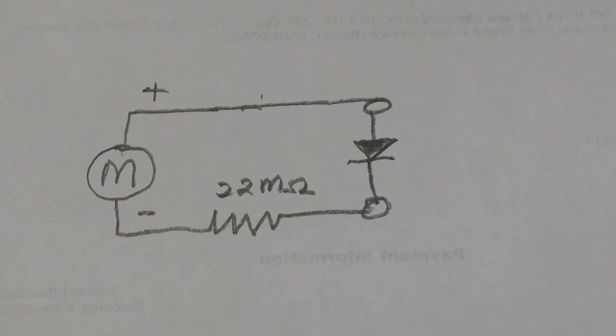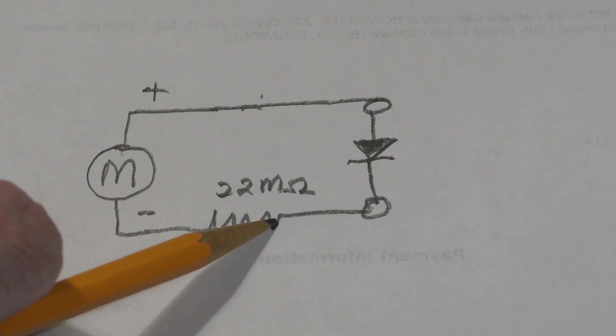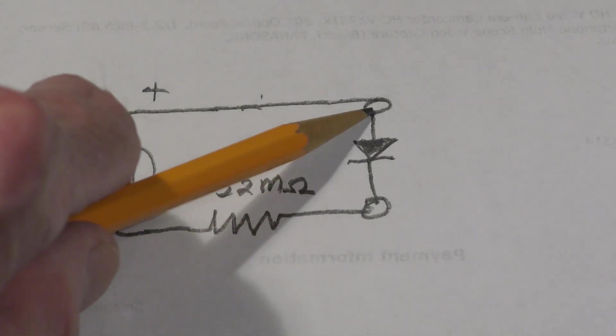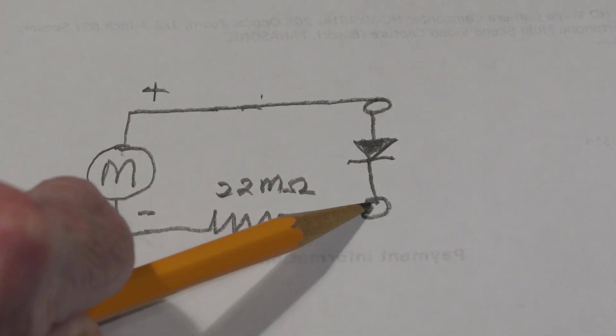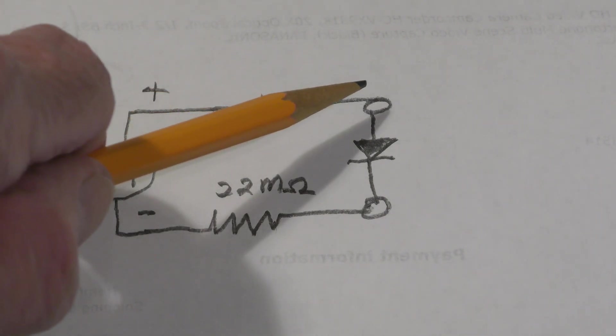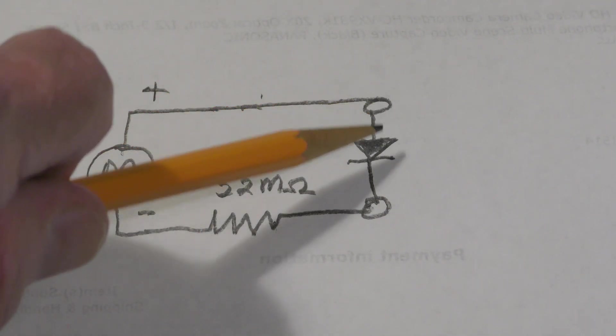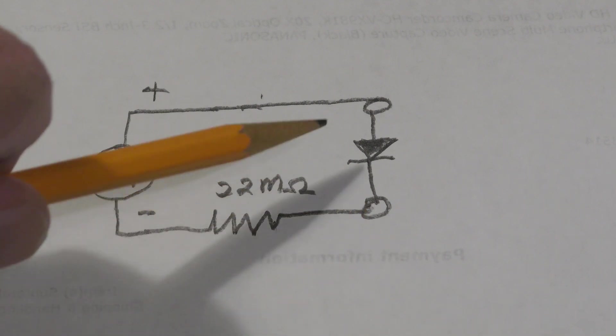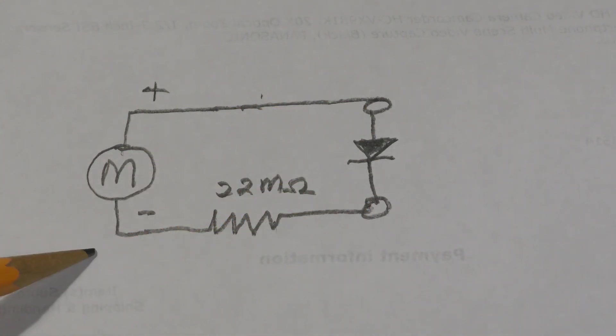Here is the circuit that we're using. This is the megaohm meter. Notice there's a 22 meg current limiting resistor here, and then the diode is connected here.